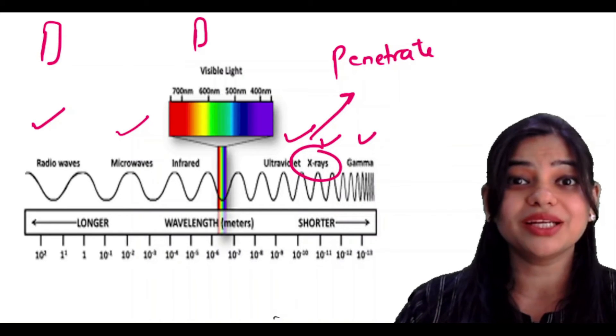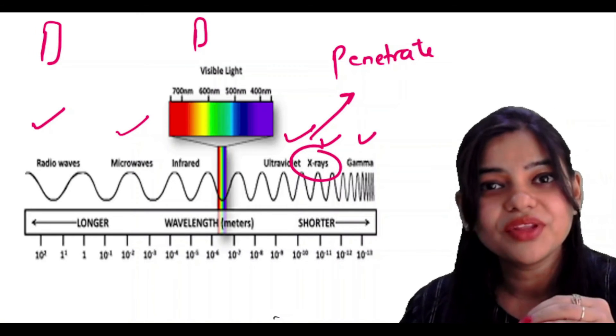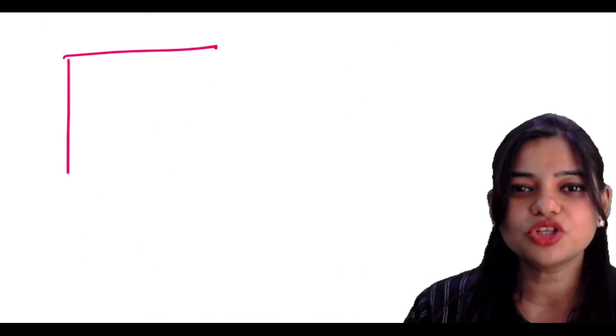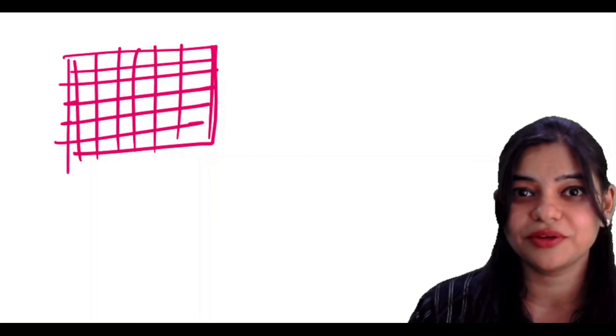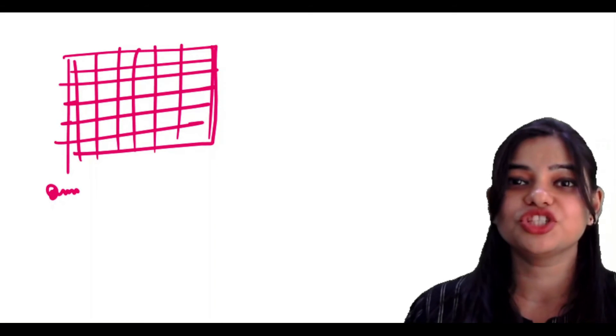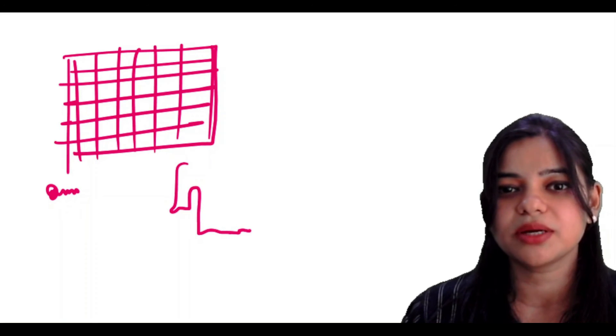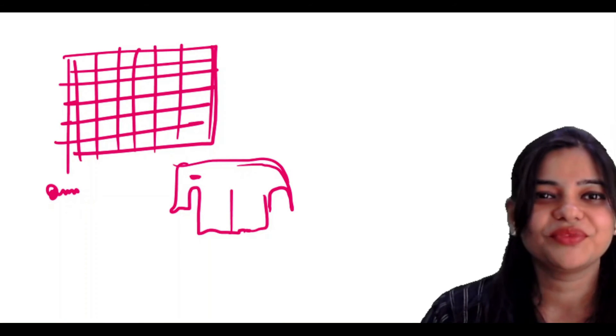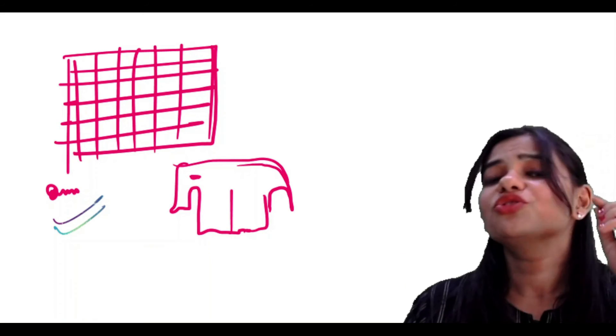X-rays can even penetrate through our body. If you go to mall, hospital, or airport, you'll see X-ray machines which can penetrate through your bag and check what is present inside. For example, to understand, this is a net I have taken. Now who can pass through the net? One has a small chiti and one has a big hathi. So who can pass through the net, chiti or hathi? Absolutely, only chiti can pass through this. Hathi cannot pass through this net because chiti is very small.